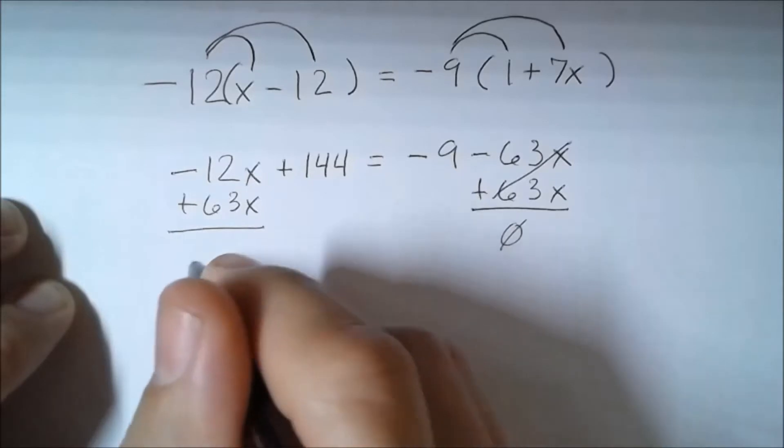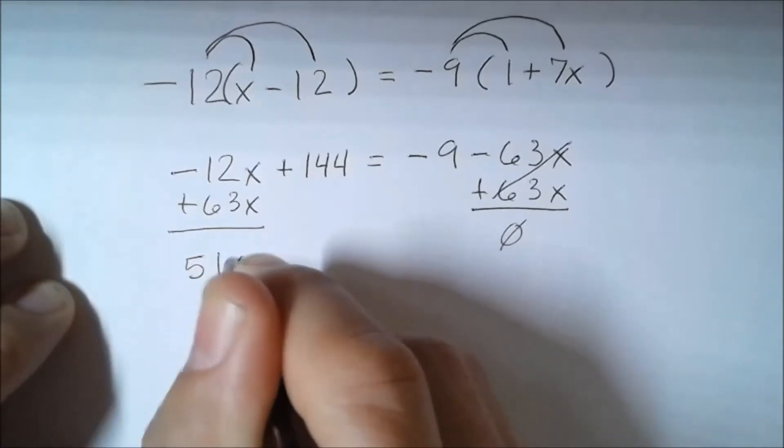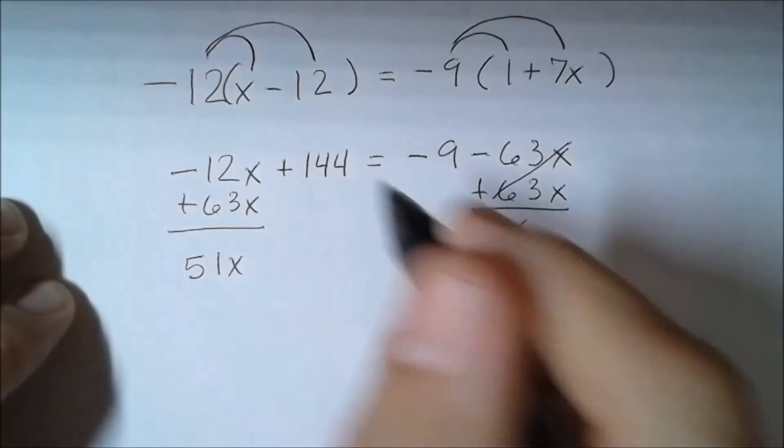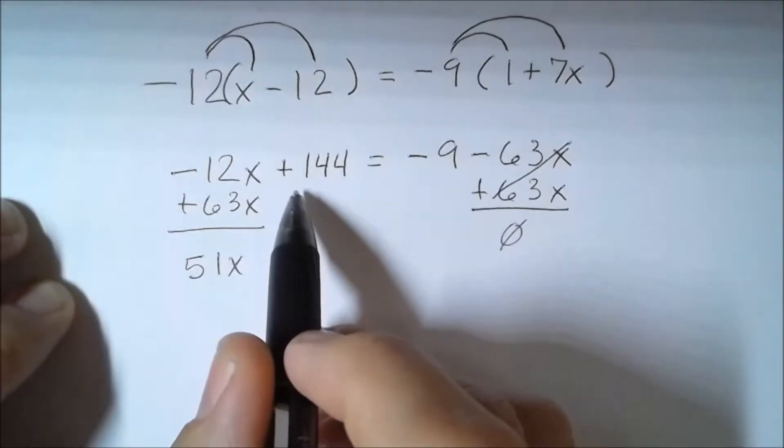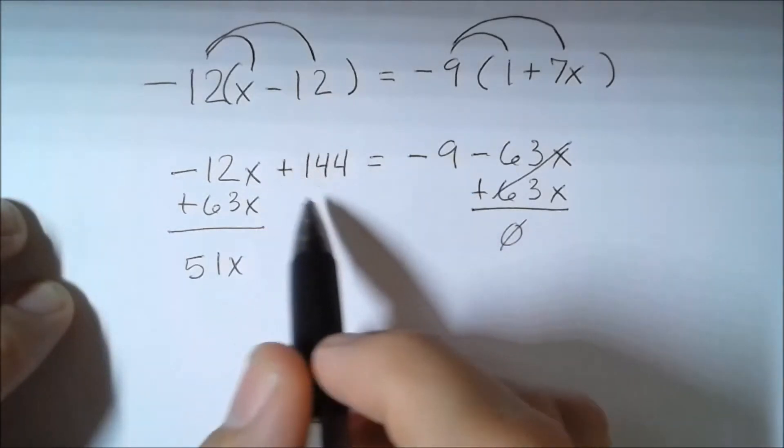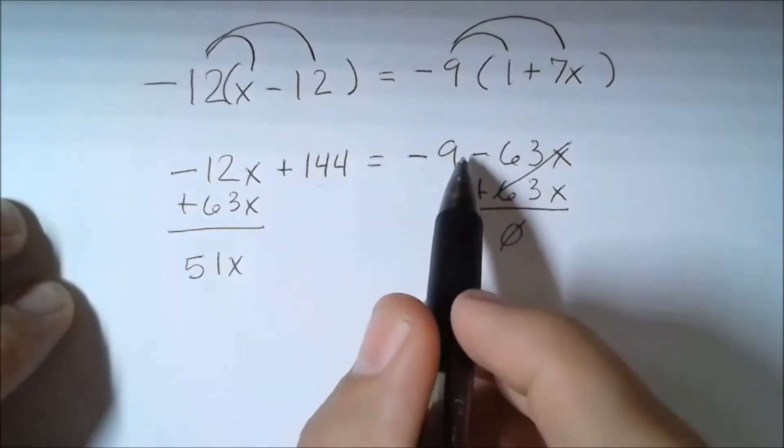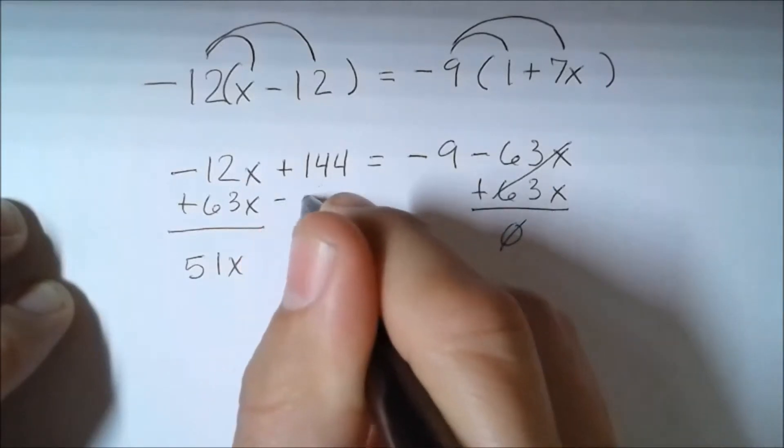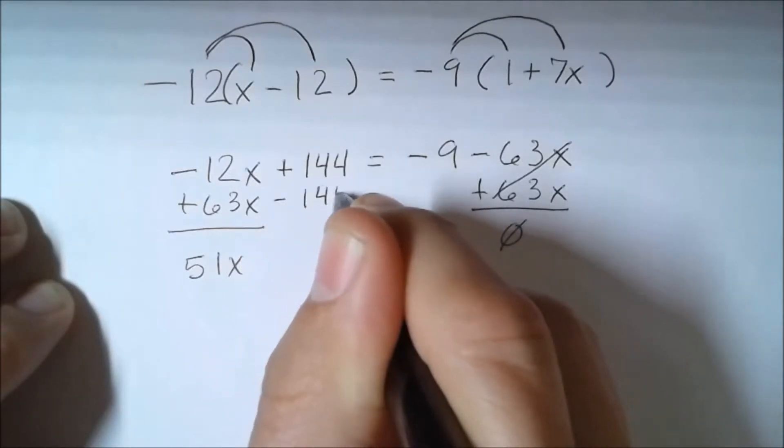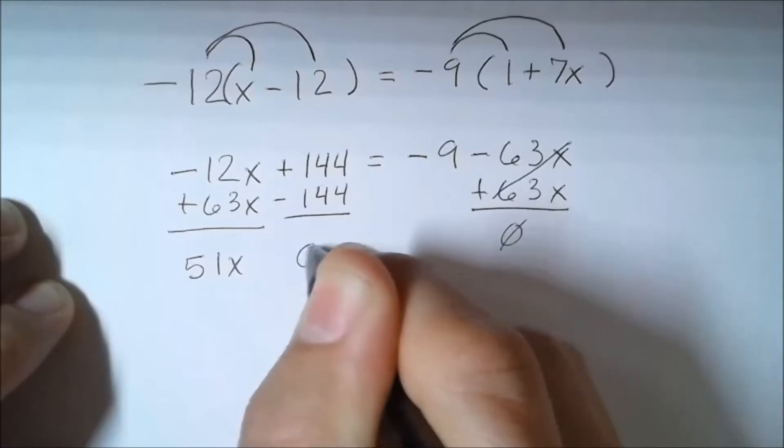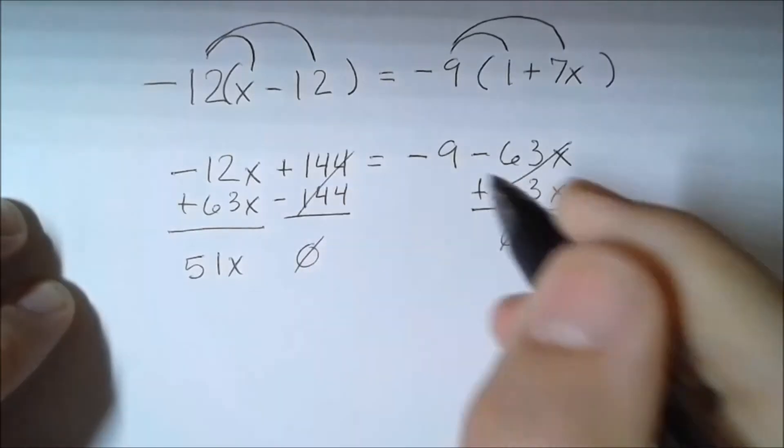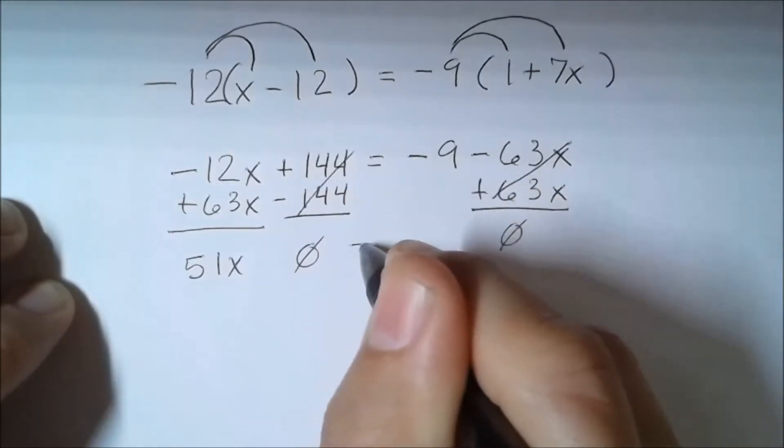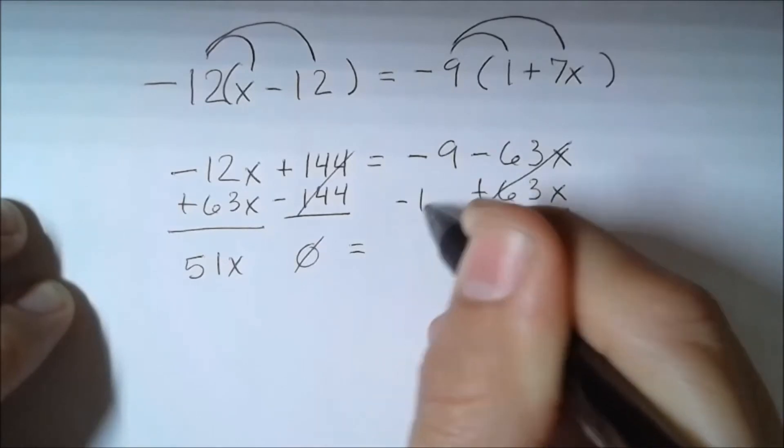The next thing I need to do is move this 144 over. The way I do that is inverse operations, so I'm going to subtract 144. That gives me 0, and then I'm also going to subtract it from this side, so minus 144.